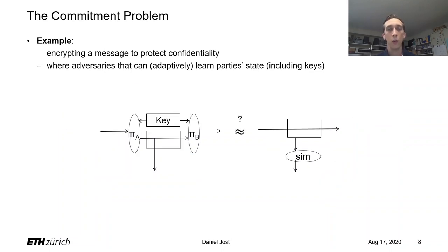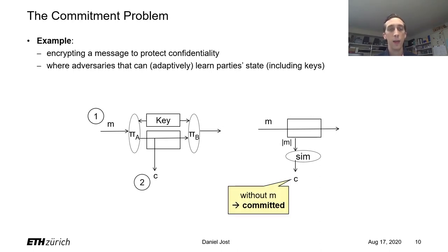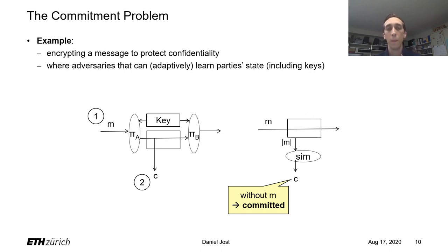More concretely, in order to prove the protocol secure, we need to show that for any interactive environment the two worlds are computationally indistinguishable. The environment might input any message M and then receive the ciphertext C at Eve's interface. In the ideal world the same needs to happen, so it's the simulator's job to come up with a ciphertext that looks computationally indistinguishable. As long as the encryption scheme is CPA secure, the simulator can do so by encrypting any arbitrary message of the appropriate length. However, the simulator is now committed to this ciphertext C that does not depend on the actual message.